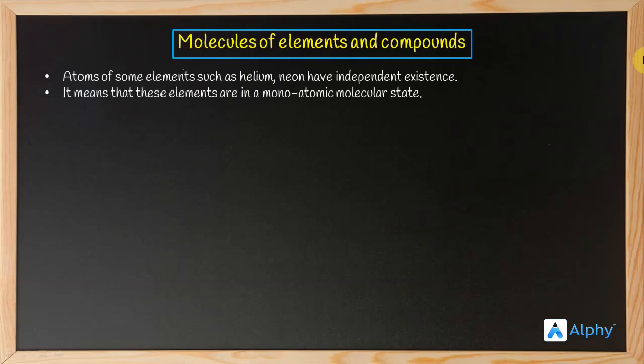Helium and neon have independent existence. We have to say that these two elements are noble gases and inert gases. So they are already stable.